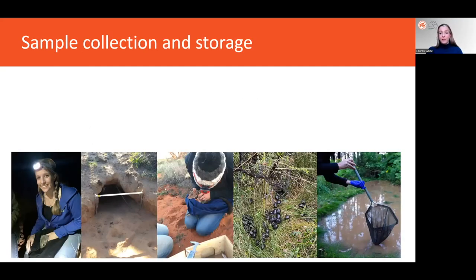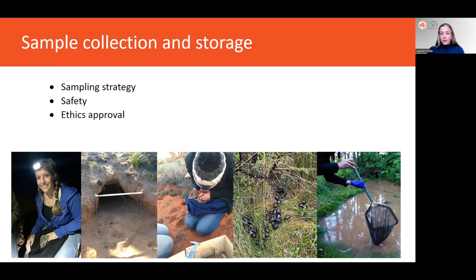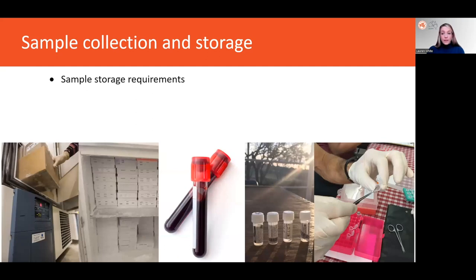After the study design has been agreed upon, the next step is to go get the samples. Usually this involves fieldwork, and some things that researchers will keep in mind when planning field visits and sample collection are: sampling strategy, safety considerations particularly for remote work, ethics approval especially if wildlife need to be handled, permits required for carrying out research on public land, or agreements needed with private landowners or traditional owner groups. An important consideration for sample collection is also how to store samples until they can be transferred to the lab.